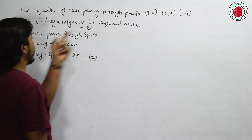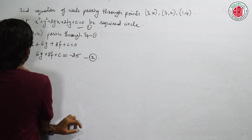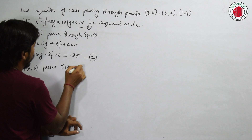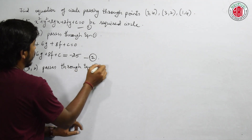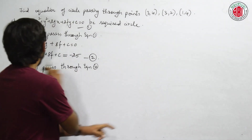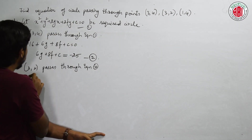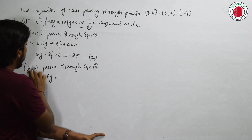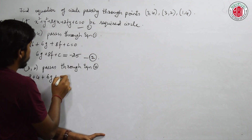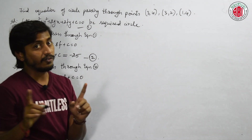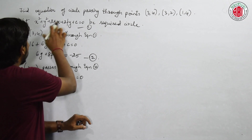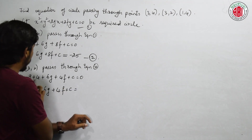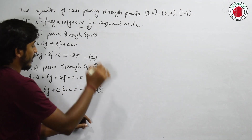Next, let us take the second point. 3 comma 2 passes through equation 1. Substituting: 3 squared is 9, 2 squared is 4. If I substitute 3 here, 2 times 3 is 6g. If I substitute 2 here, it will be 4f plus c equal to 0. This will be 6g plus 4f plus c equal to minus 13. This is the third equation.